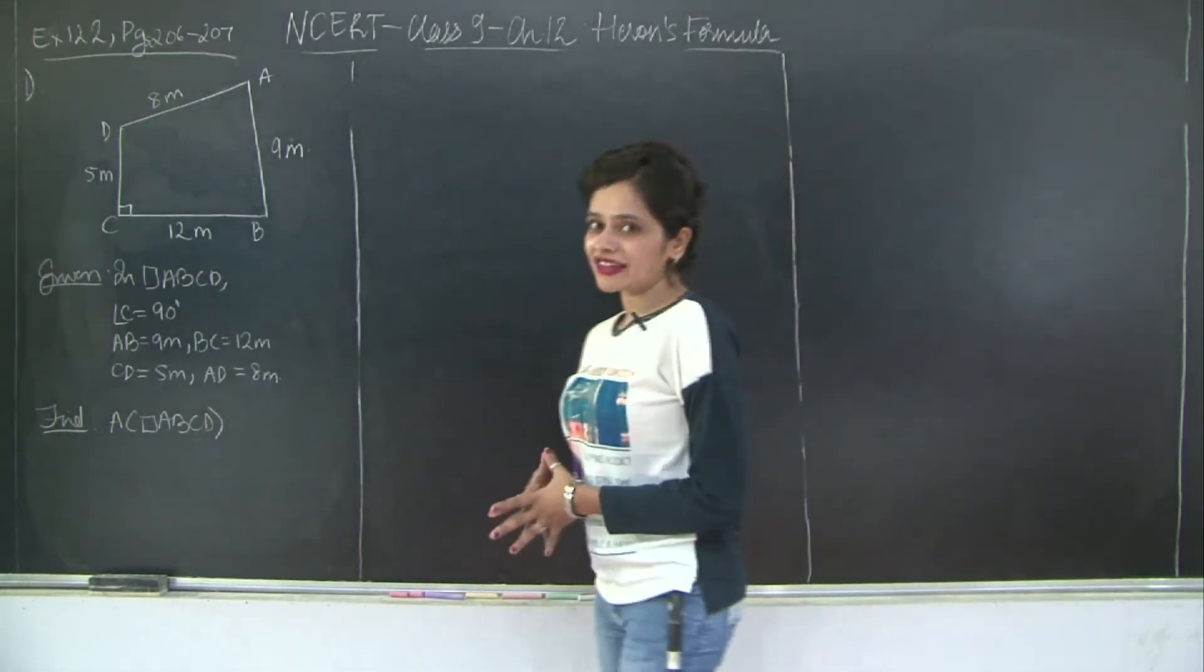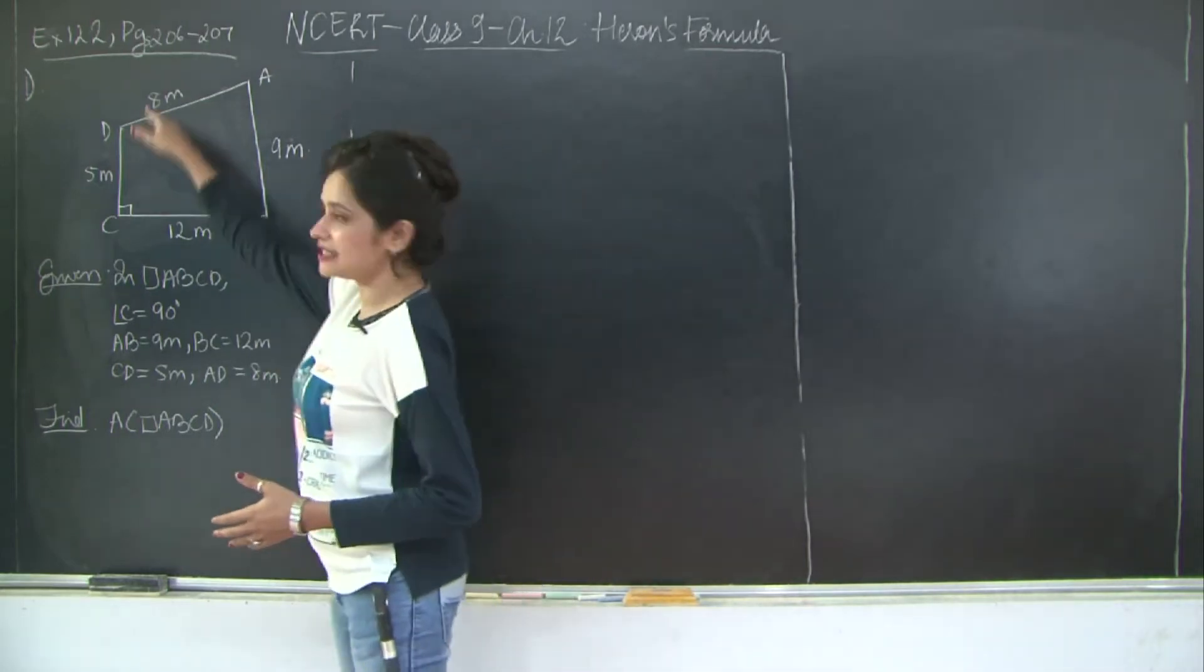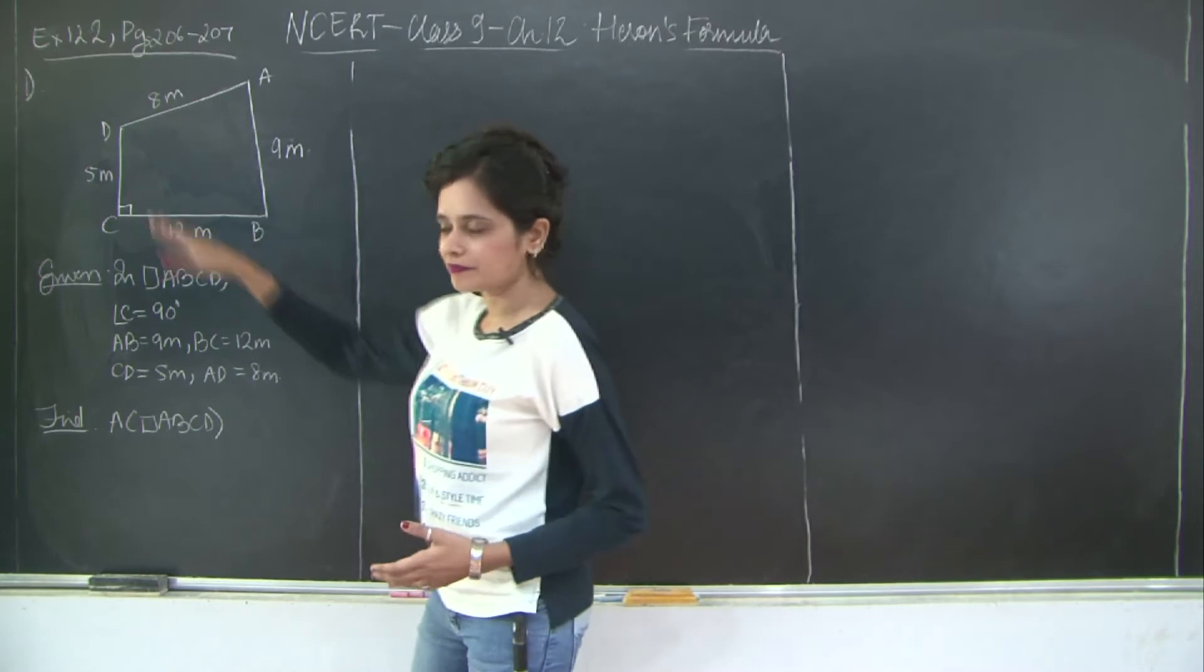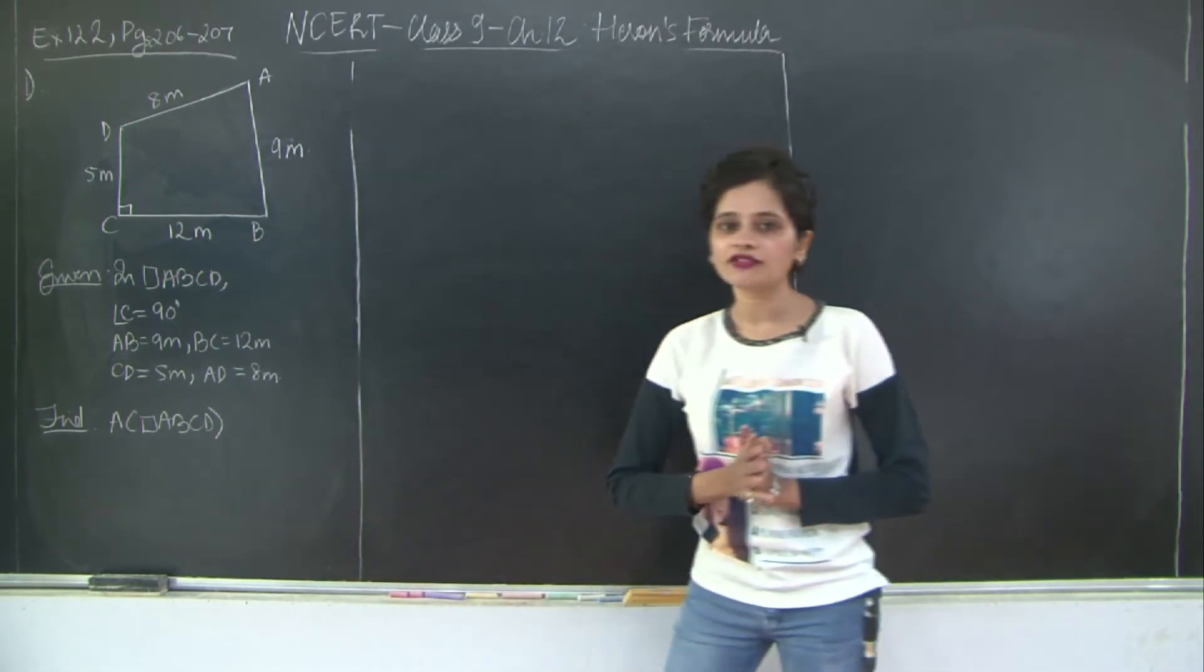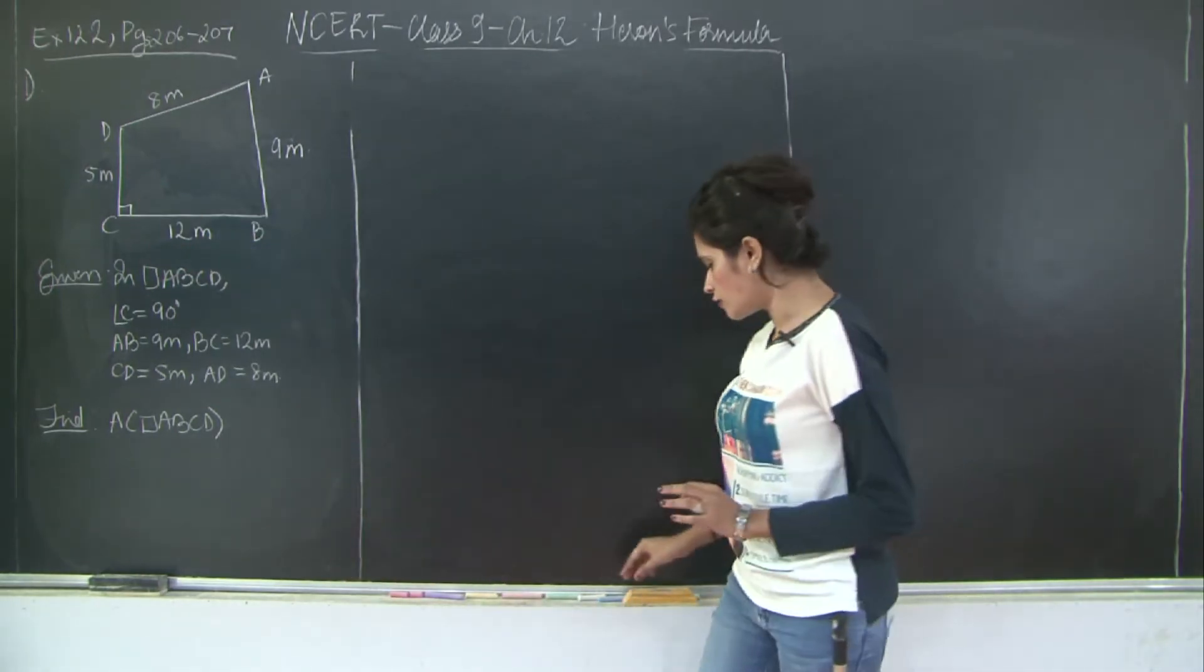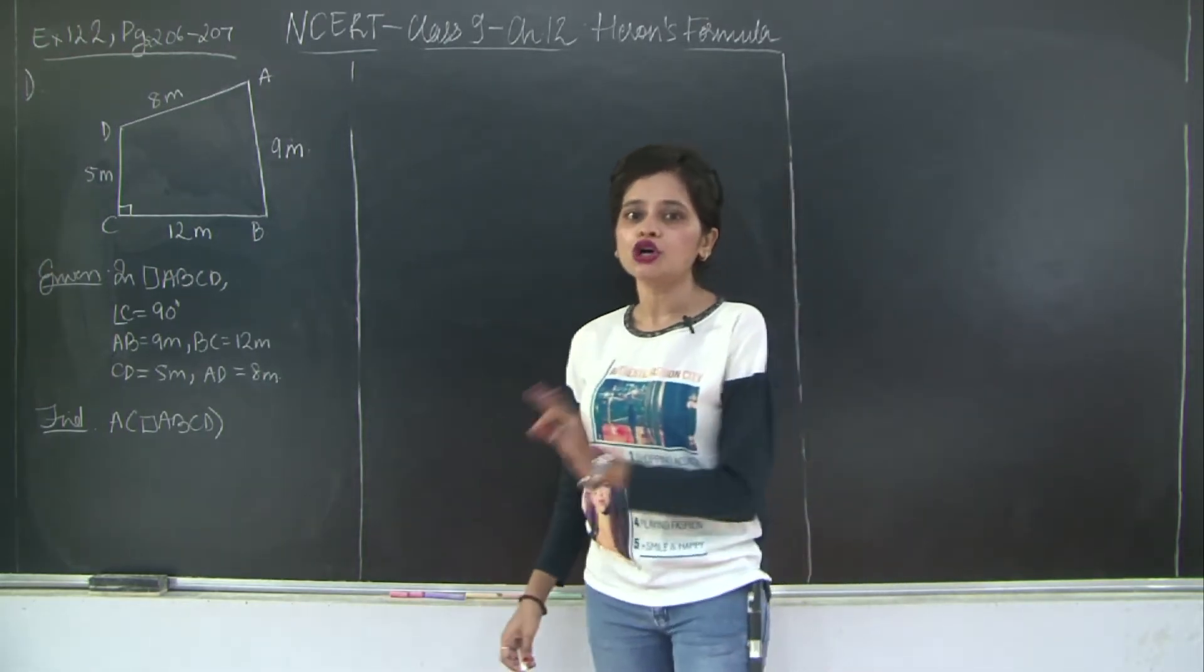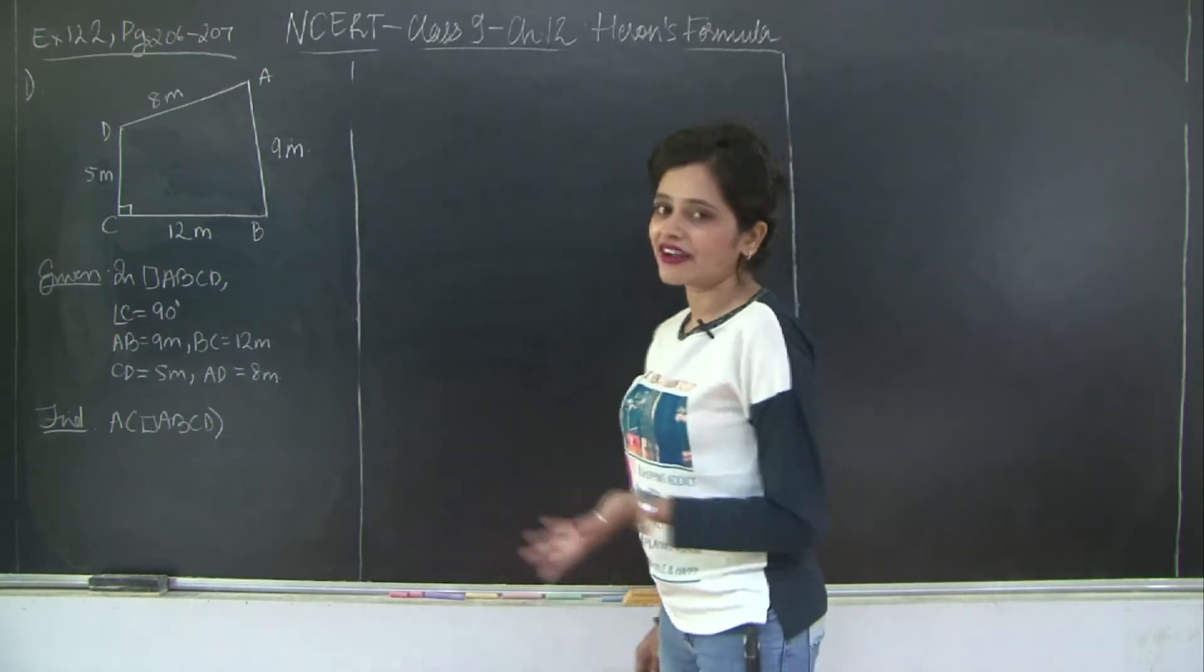The first question: it's been given that in quadrilateral ABCD, angle C is 90 degrees and the respective lengths are given here. You need to find the area of the quadrilateral ABCD. So how do you find the area of quadrilaterals? We learned that we are going to split the quadrilateral into two triangles and find the area.